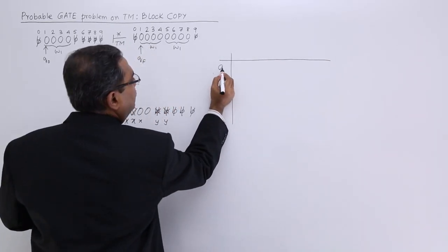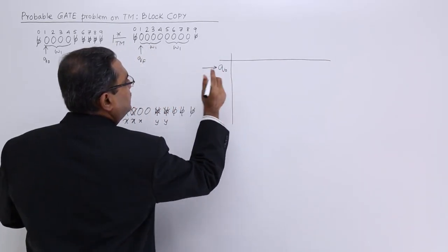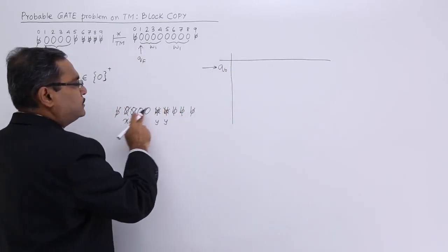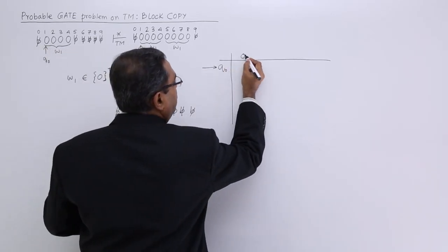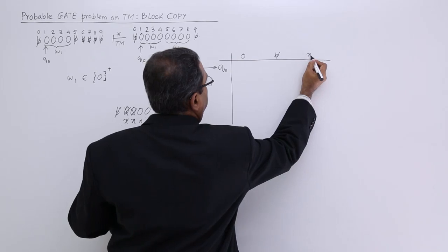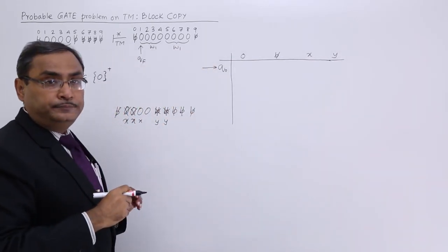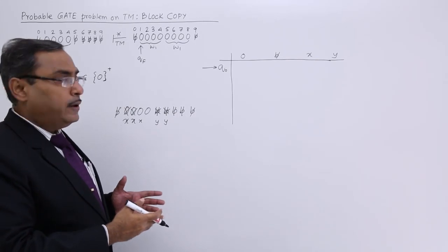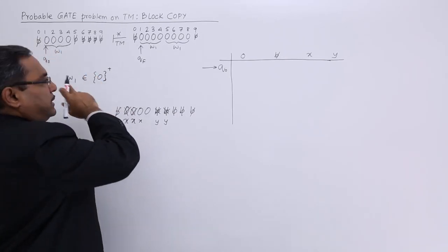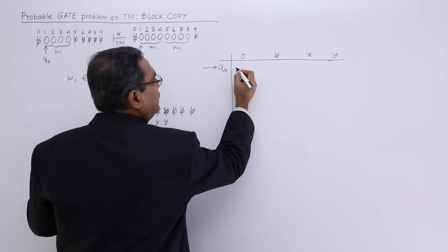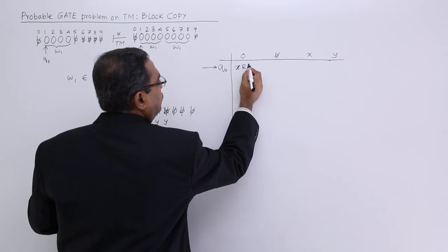How to design the Turing machine? I am going to design that one in front of you. Here the initial state is q0. What are the symbols I am going to get here? That is 0, blank, x and y. I think these four symbols I am going to get. For the first time, if I get 0, then I shall make this one x. I shall move to right. I shall go for q1.